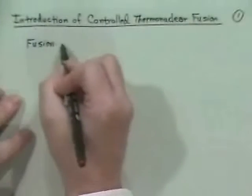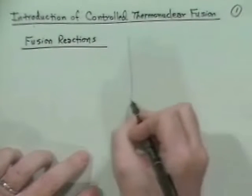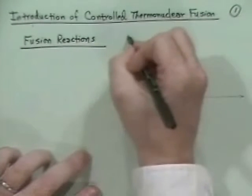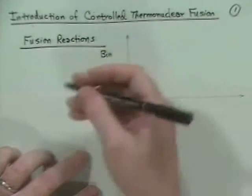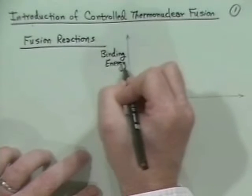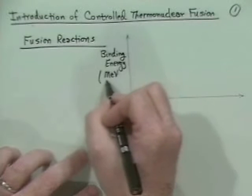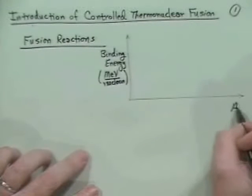Let's talk about the basic fusion reactions, which are probably moderately familiar to people, but I want to stress some particular aspects. The first aspect is to understand what the difference between fission and fusion is. Let us make a plot of how deeply bound various nuclei are — specifically, the binding energy in MeV per nucleon.